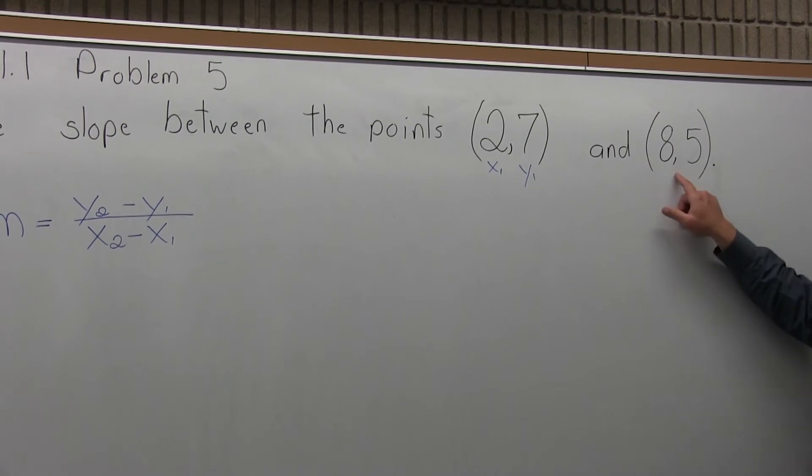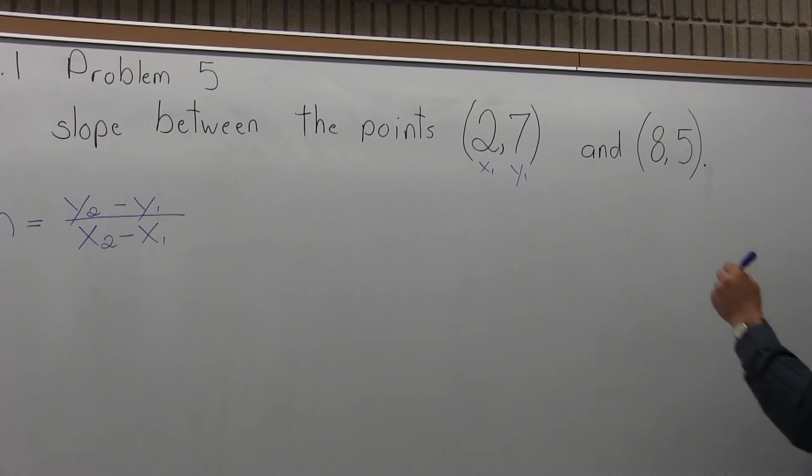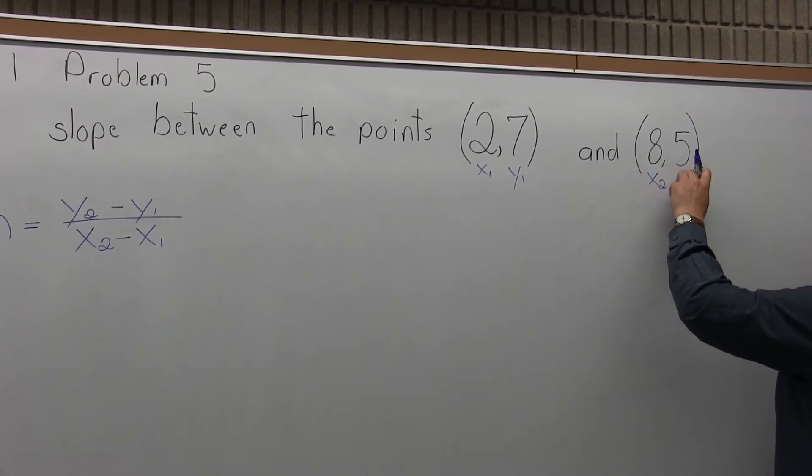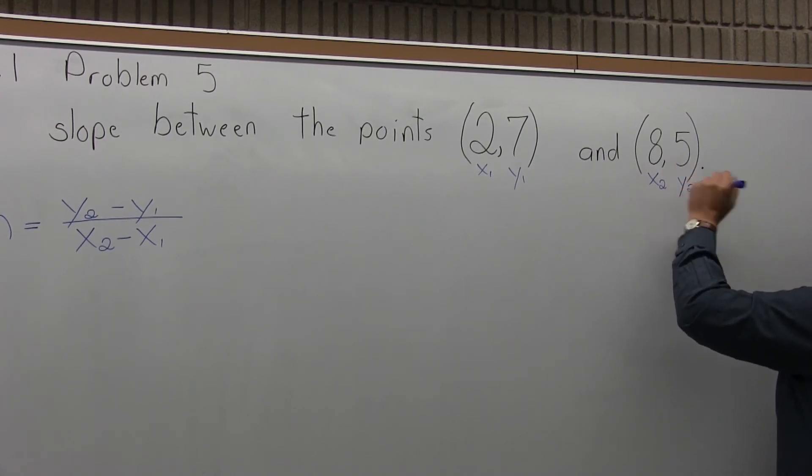The other point, (8,5), is given second, so I consider it to be point 2. Therefore its x-coordinate of 8 will be labeled as x2, and its y-coordinate of 5 will be labeled as y2.